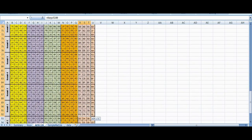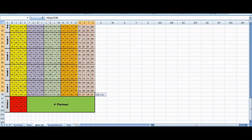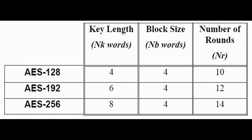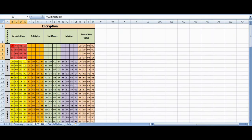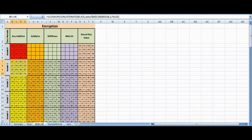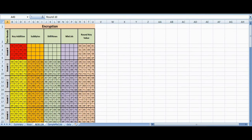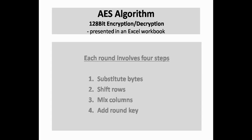Let us now work on AES encryption. AES 128-bit encryption consists of 10 iterations, plus an initial XOR operation of the key with the plain text, making the number of round keys required 11. Each round involves the following four steps: substitute bytes, shift rows, mix columns, and add round key.